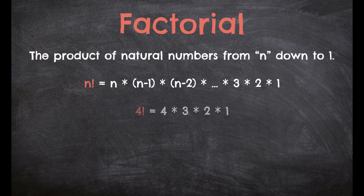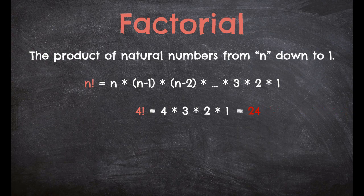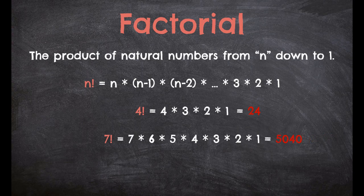An example is 4 factorial, which would be 4 times 3 times 2 times 1. You're always starting with whatever number is in front of that exclamation mark and going all the way down to 1, multiplying all those numbers. So in this case we get an answer of 24. Now if we did 7 factorial, that's 7 times 6 times 5 times 4 times 3 times 2 times 1, and that gives us 5040.